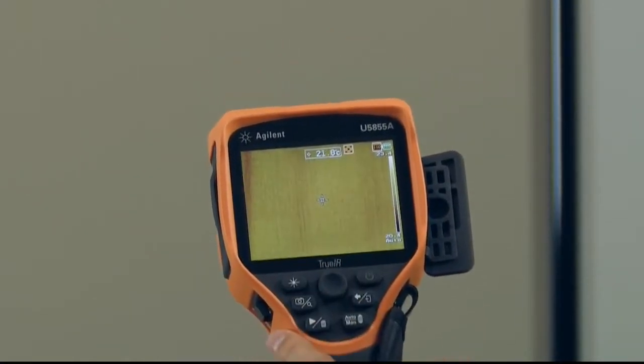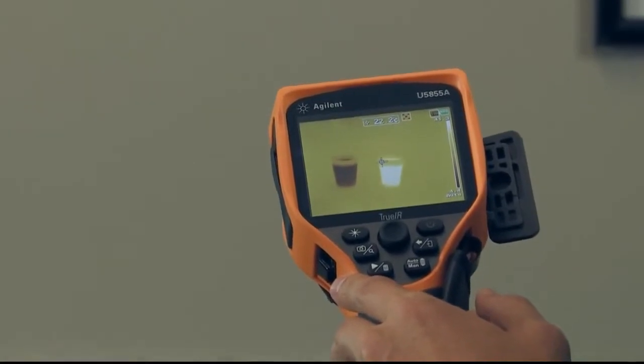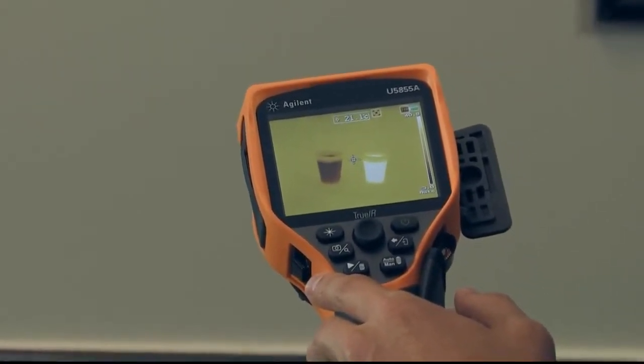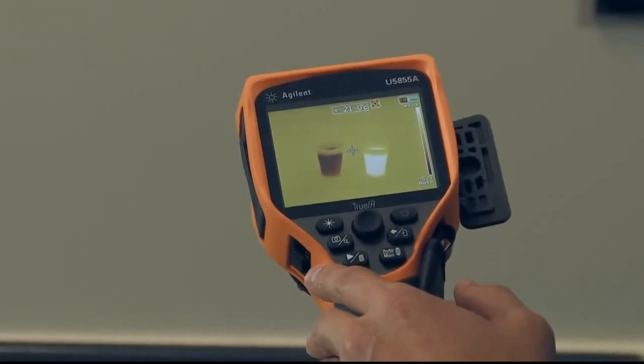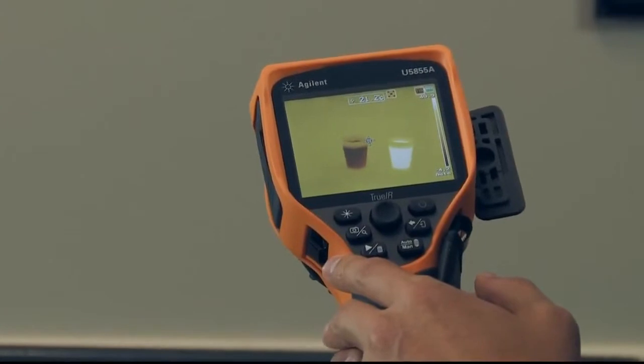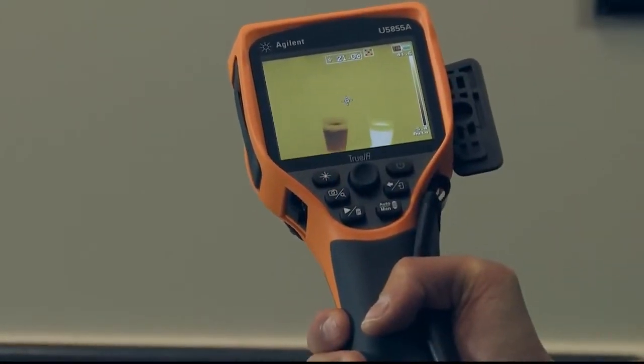So now if I actually point at my hot and cold cups of water you can see that hot is very bright yellow whereas the cold is more of a darker black color. So that's something else to help you visualize your temperatures.